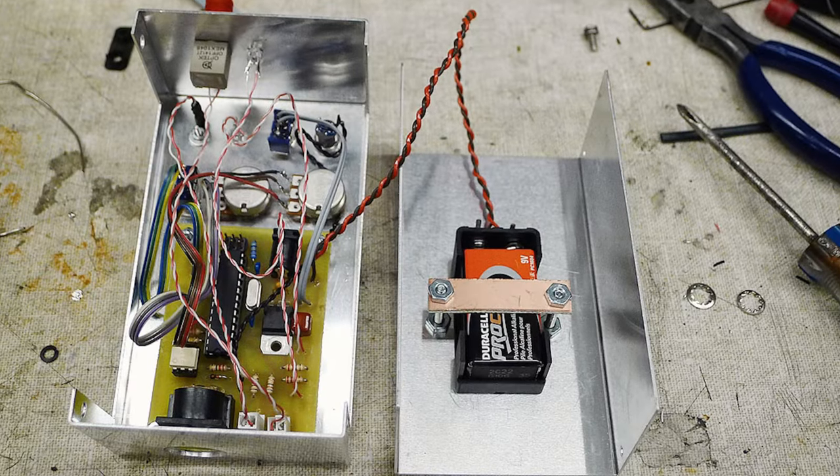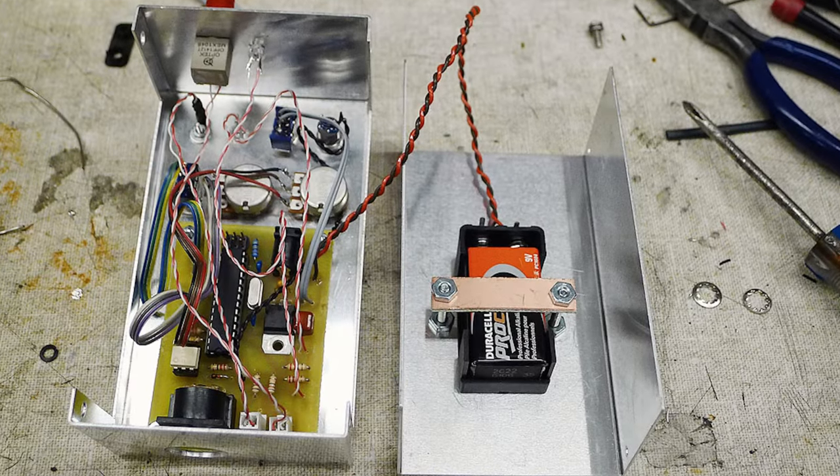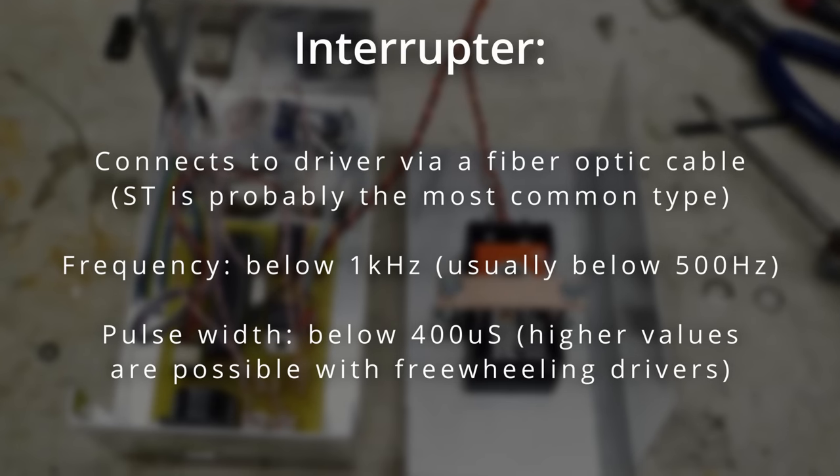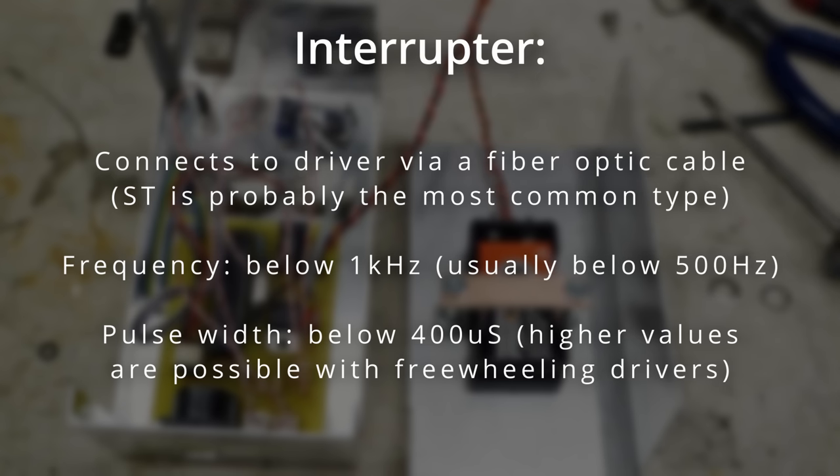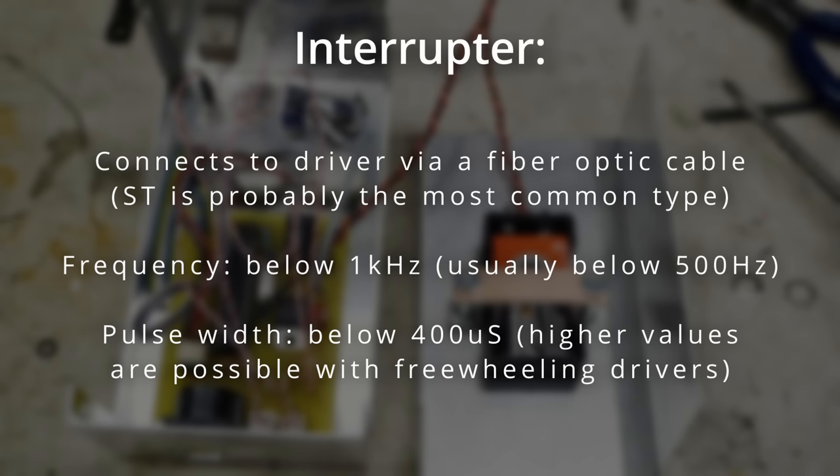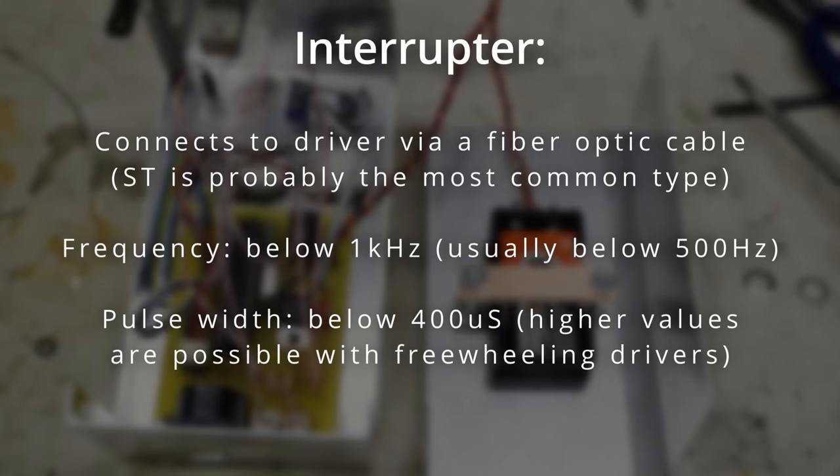For most standard DRSSTCs, a battery-powered interrupter connects to the driver via an ST fiber optic cable. The interruption frequency is usually kept below 1 kHz, and the pulse width is typically no longer than a few hundred microseconds. Once you start pulsing close to or above 1 ms, you risk damaging the transistors. Of course, there are ways around this, such as detuning and freewheeling, but they require specialized drivers and are mostly beyond the scope of this project.